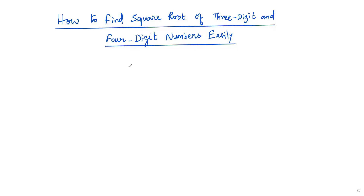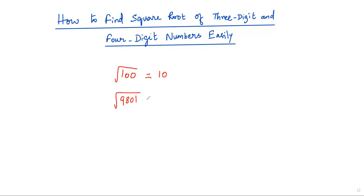Before we start, we need to understand some basic facts. If we find the square root of a 3-digit or 4-digit perfect square, the answer will always be a two-digit number. For example, the smallest 3-digit perfect square is 100, and its square root is 10. The largest 4-digit perfect square is 9801, and its square root is 99.